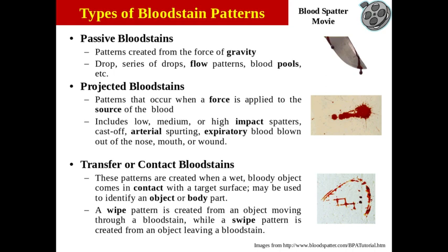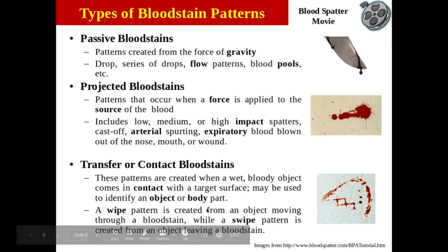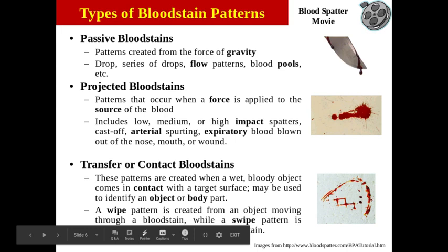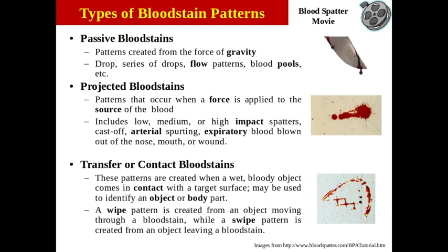The last type is a contact or transfer blood stain, where blood is transferred from one surface to another. For example, in the image you can see a shoe print on the ground — the person stepped in blood and transferred it elsewhere. It can also come from a bloody fingerprint on a wall, or if someone's bloody leg came in contact with a wall, leaving a pattern from their pants — that would be a wipe or swipe pattern. Either way, it's transferring blood from one surface to another.